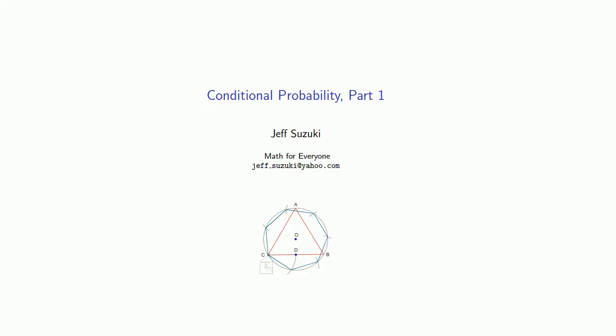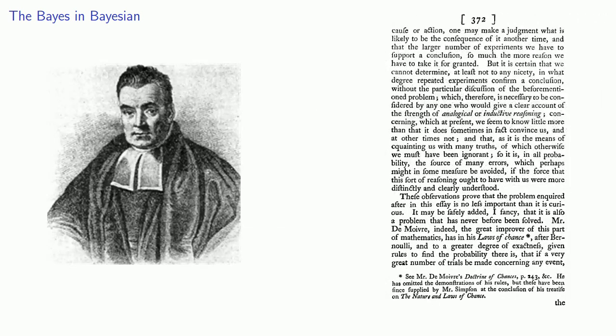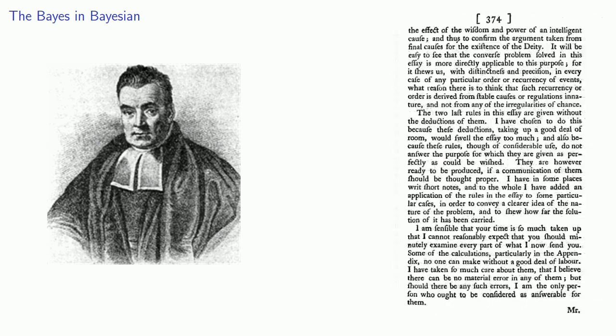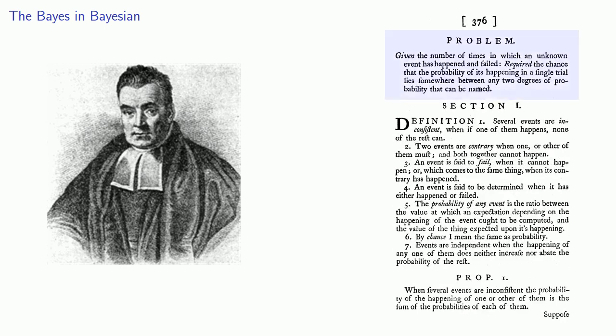One of the most important and misunderstood ideas in probability and statistics concerns what's known as conditional probability. This gets its start way back in 1763, when an essay toward solving a problem in the Doctrine of Chances appeared. The author was Thomas Bayes, who had actually died two years earlier. Bayes raised the question of the probability of an event given an observance of its occurrence or non-occurrence on a number of repeated trials.